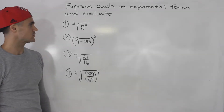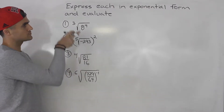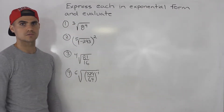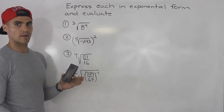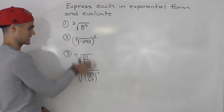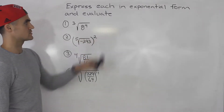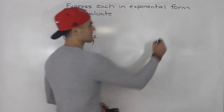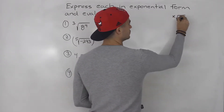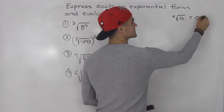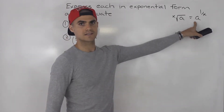Welcome back everyone. Moving on with rational exponents, we have to take each of these expressions, convert them to exponential form, and then evaluate them. As mentioned in the overview video, there are two formats: the radical expression format and the exponential form. The key takeaway is that if you have the x-th root of something, you can rewrite that as a to the power of 1 over x.